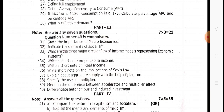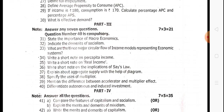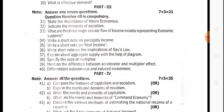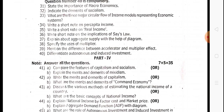Three-mark questions: question 31 — state the importance of macroeconomics. Book pack. Question 32 — indicate the demerits of socialism. Book pack. Question 33 — what are the three major circular flows of income with reference to the economic system? Book pack. Question 34 — write a short note on per capita income. Question 35 — write a short note on real income. Question 36 — write a short note on the implications of Say's Law. Book pack. Question 37 — explain aggregate supply with a diagram. Book pack. Question 38 — the uses of the multiplier. Book pack. Question 39 — the difference between the accelerator and multiplier effect.